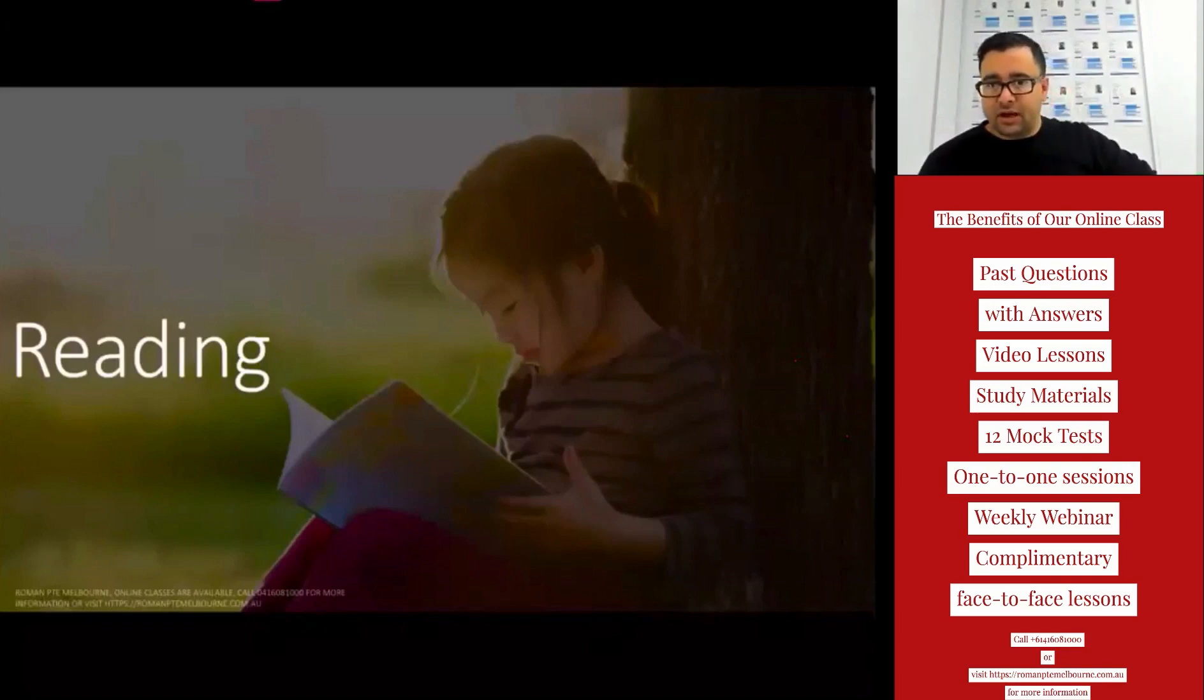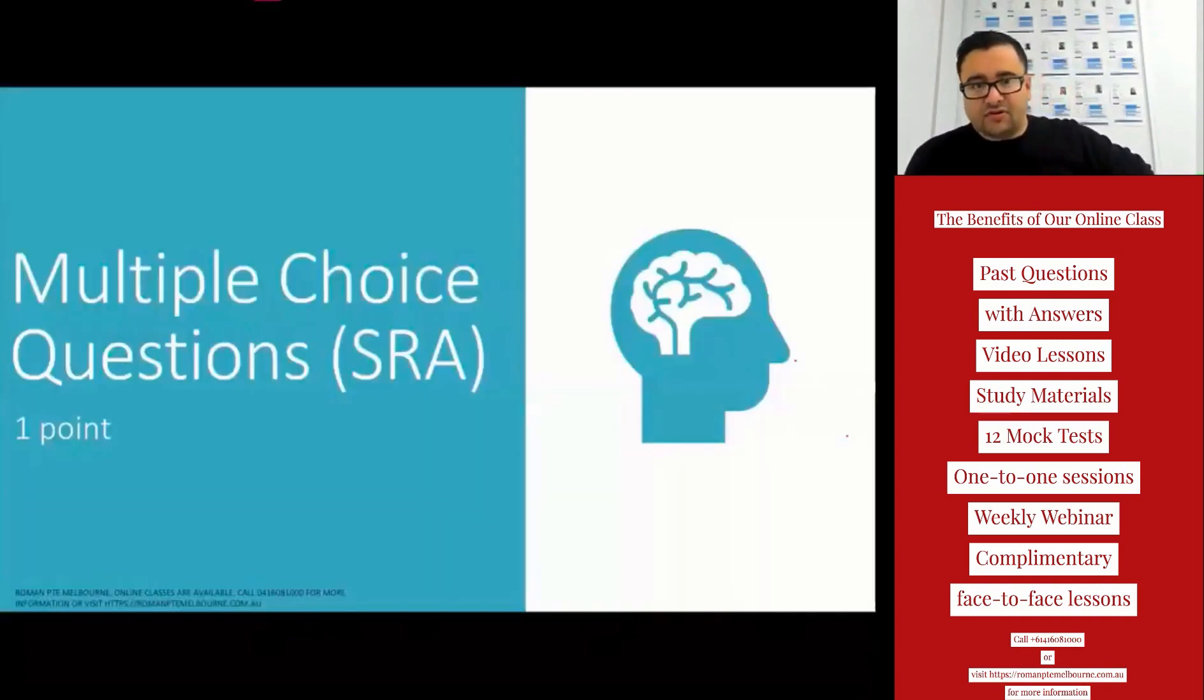Now I'll be a little quicker because I think we are doing fine, but there are so many things to discuss here and I want to have an interaction at the end. So I'm going a little quickly here. Multiple choice questions single right answer—you get one point for one right answer. There is no negative marking here.